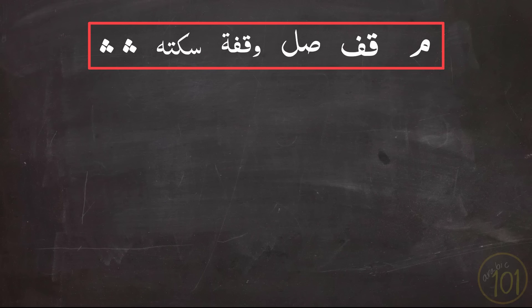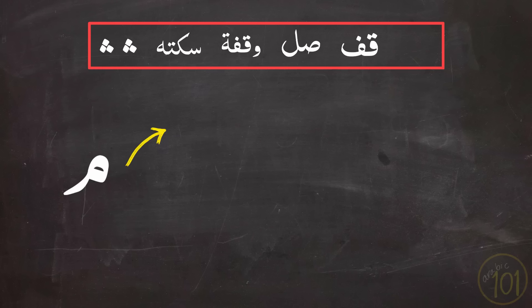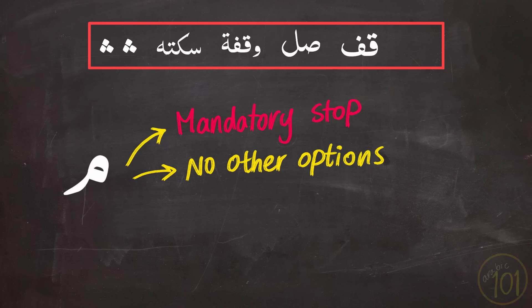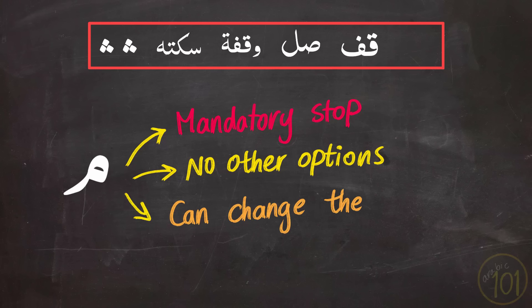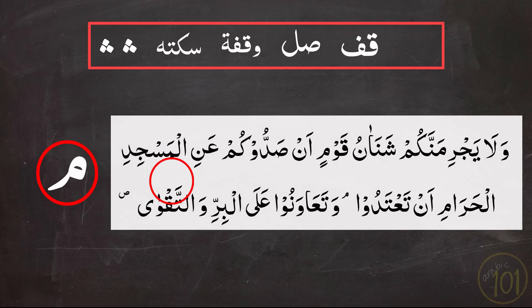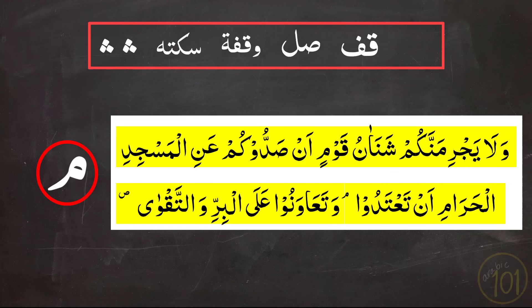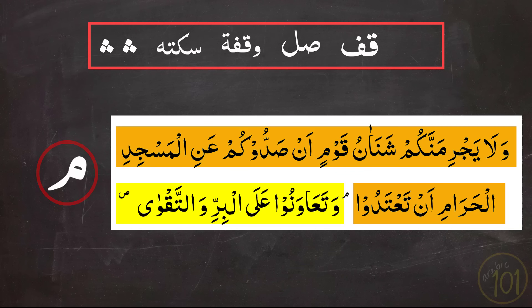Now the second category: symbols that instruct you to stop or pause. There are six of them. The most important is the Meem symbol, which is the mandatory stop symbol — there is no option except to stop, because ignoring it can potentially change the meaning of the ayah. In this example, if you continued, you would be adding the next sentence and verb to the previous sentence, which would entirely change the meaning. So pay attention and do not ignore this symbol.